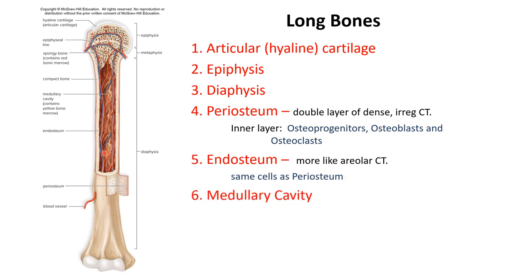The medullary cavity is primarily in the diaphysis and contains yellow marrow. Red marrow is found inside the epiphyseal medulla where spongy bone is located.